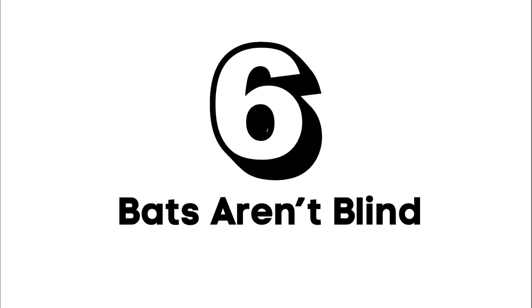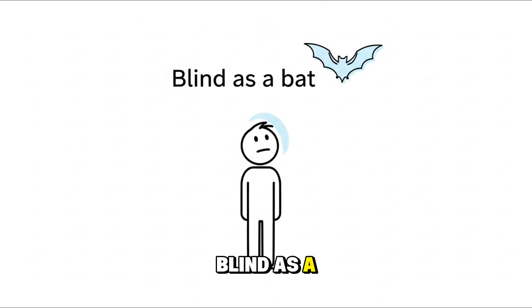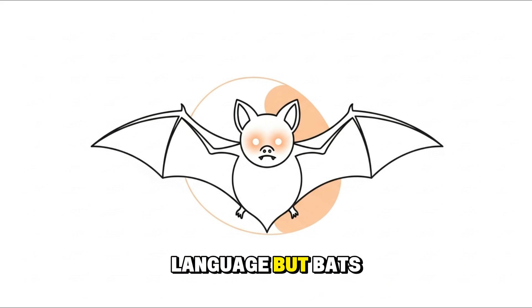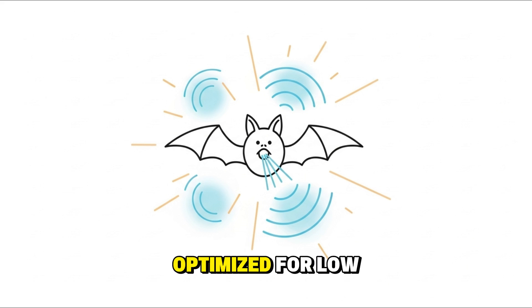Number six: Bats aren't blind. Blind as a bat, one of the most repeated phrases in the English language. But bats can see just fine. Their vision is optimized for low light, and they combine it with echolocation, a natural sonar system to map the world in sound. They use both systems in perfect sync.